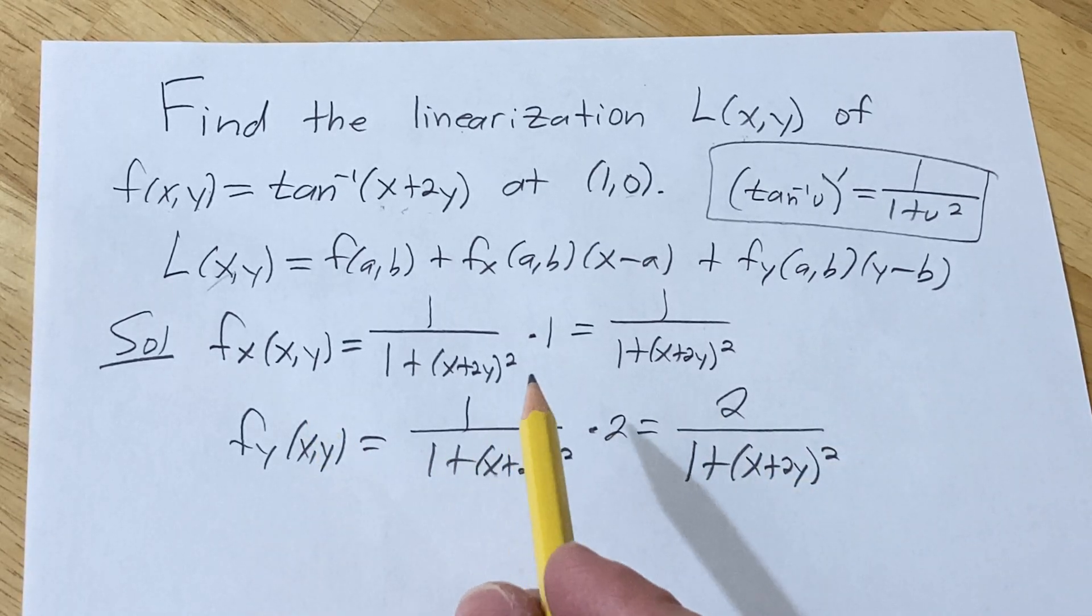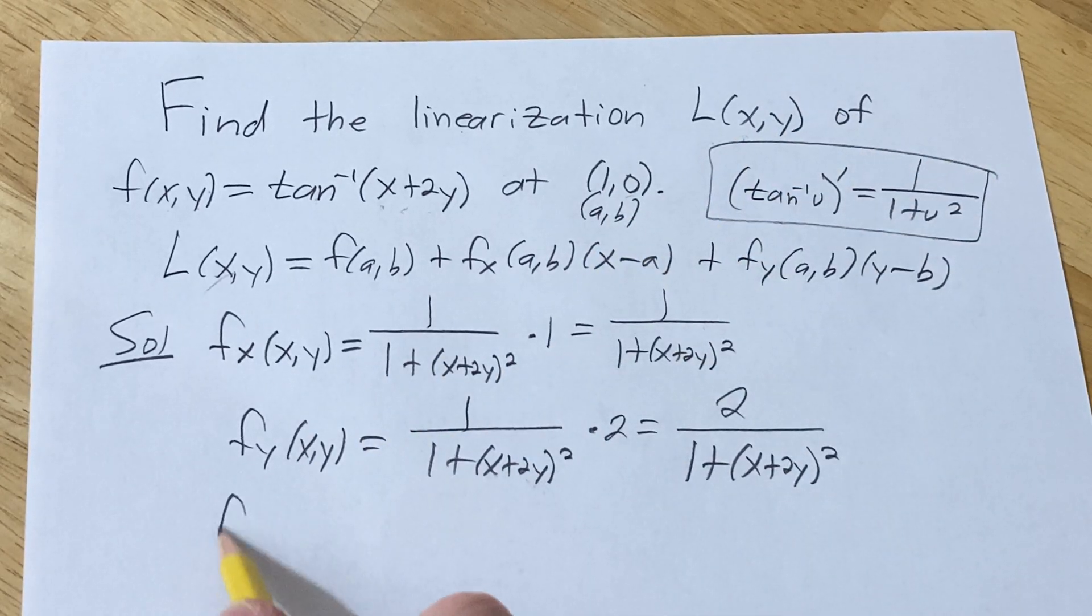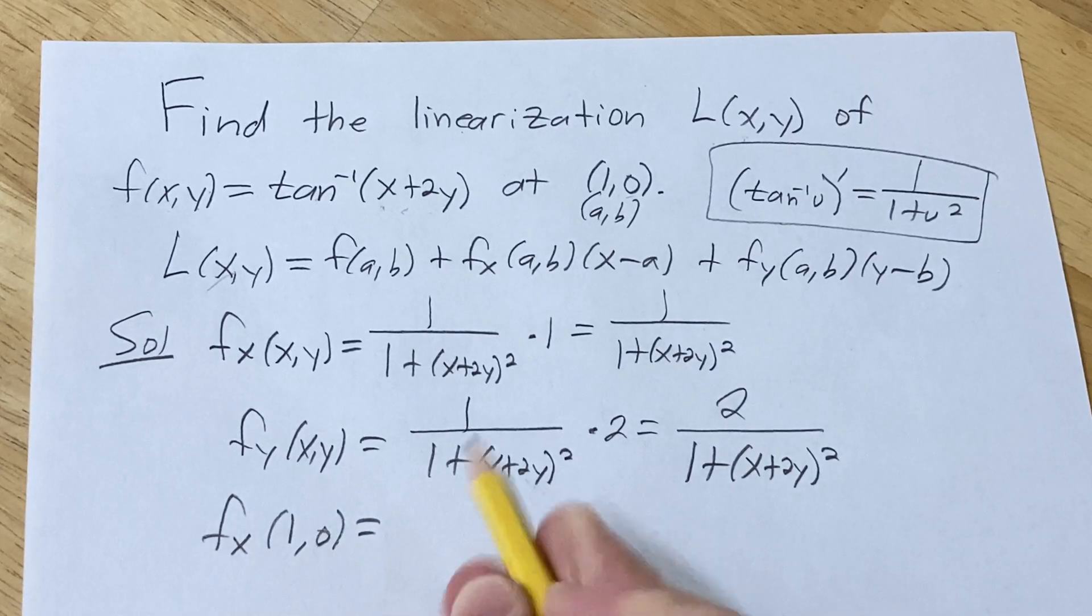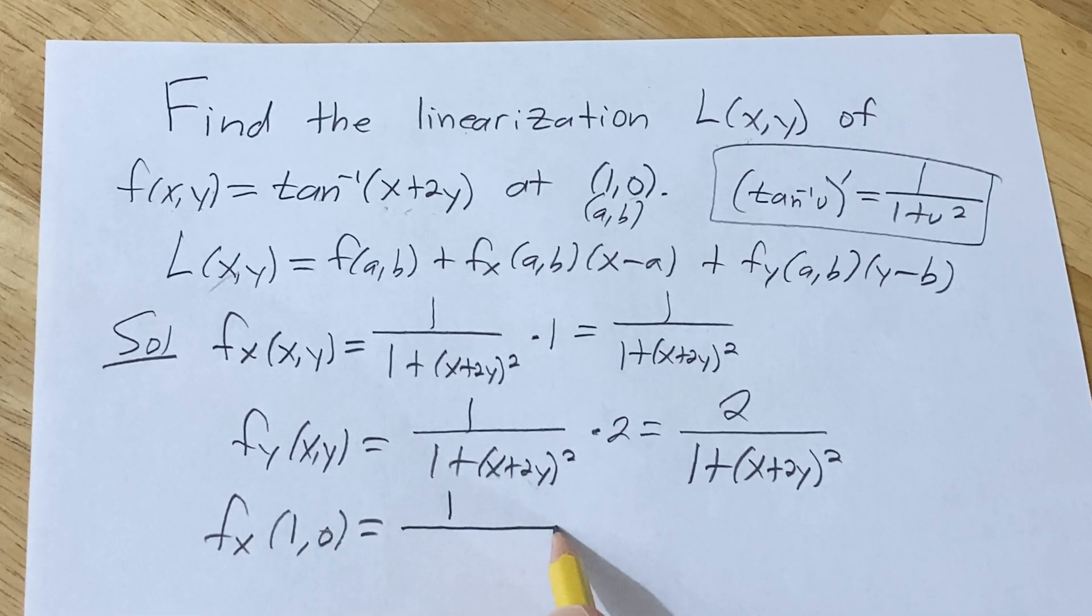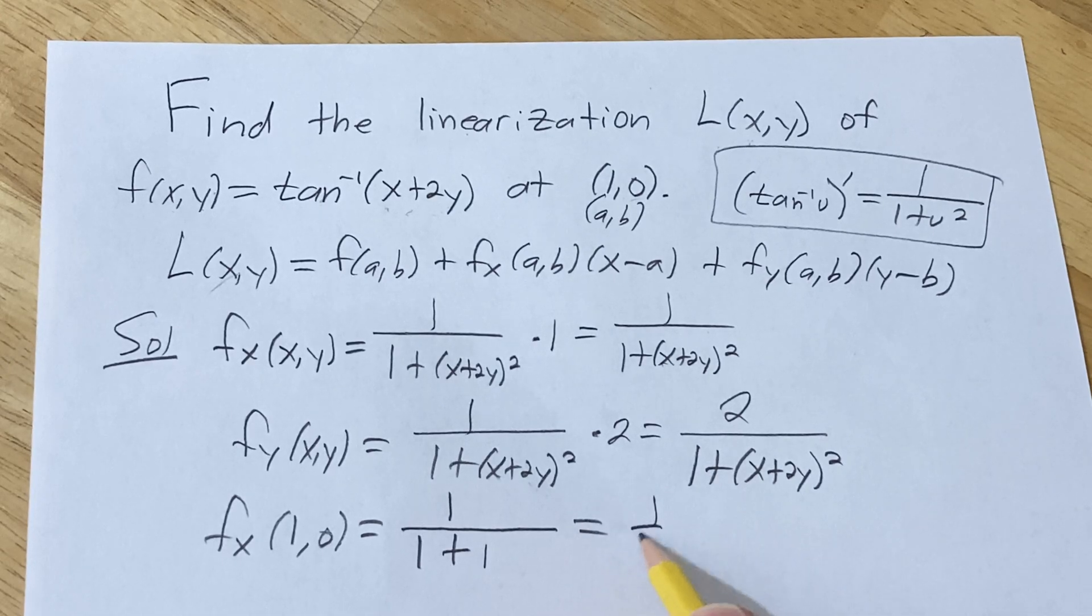All right, let's plug everything in now. Our point here is (1,0). That's our a and our b. So fx at (1,0), it's going to be 1 over 1 plus... So x is 1, y is 0, so it's just 1 squared, which is 1. So you just get 1 half.